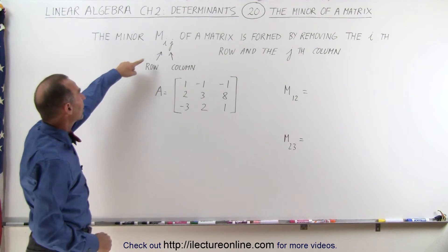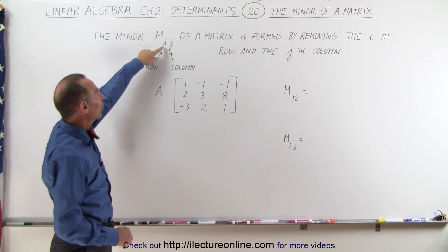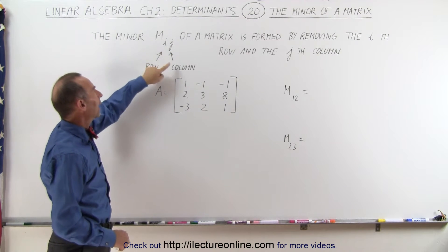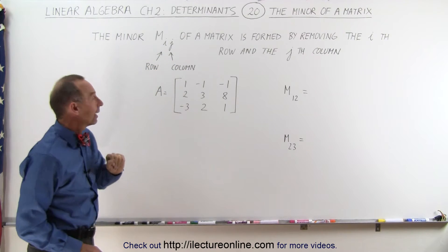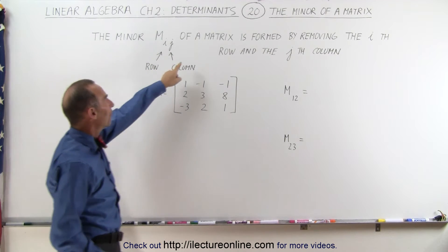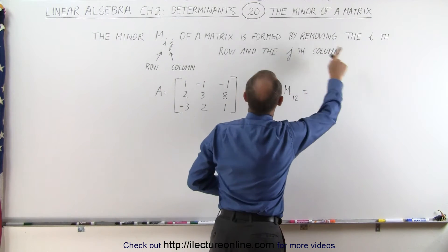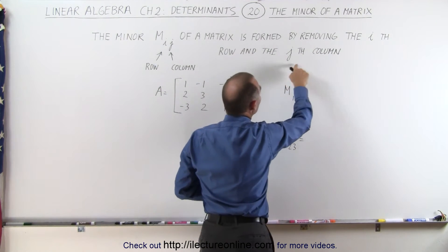The minor, which is written with an M and with the subscripts I and J where the I stands for the row and J stands for the column, and thus the minor M_IJ of a matrix is formed by removing the I-th row and the J-th column.